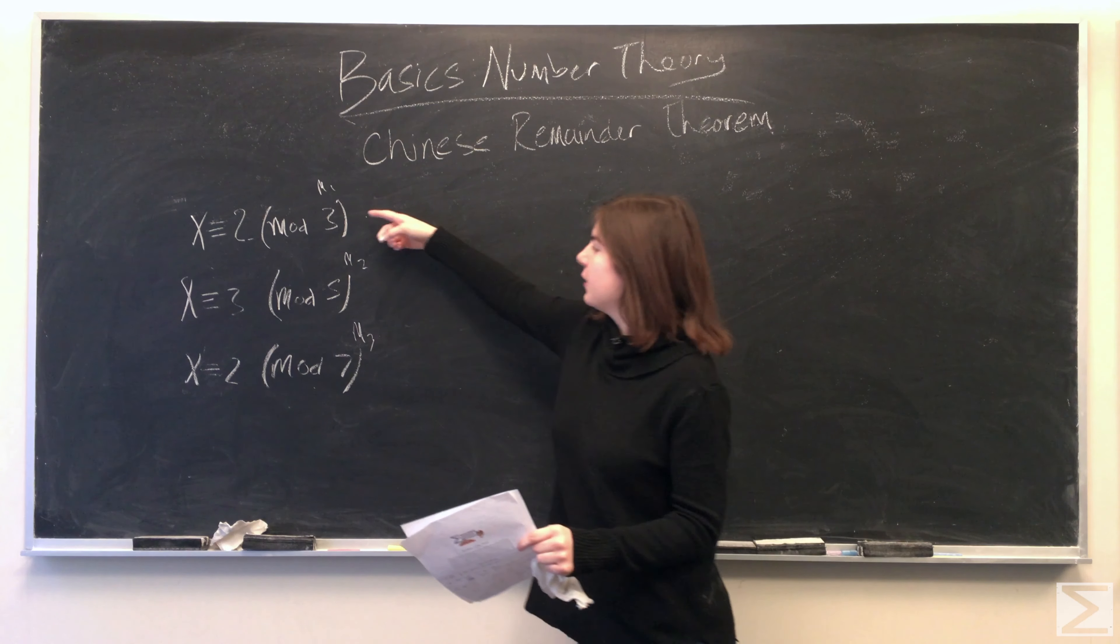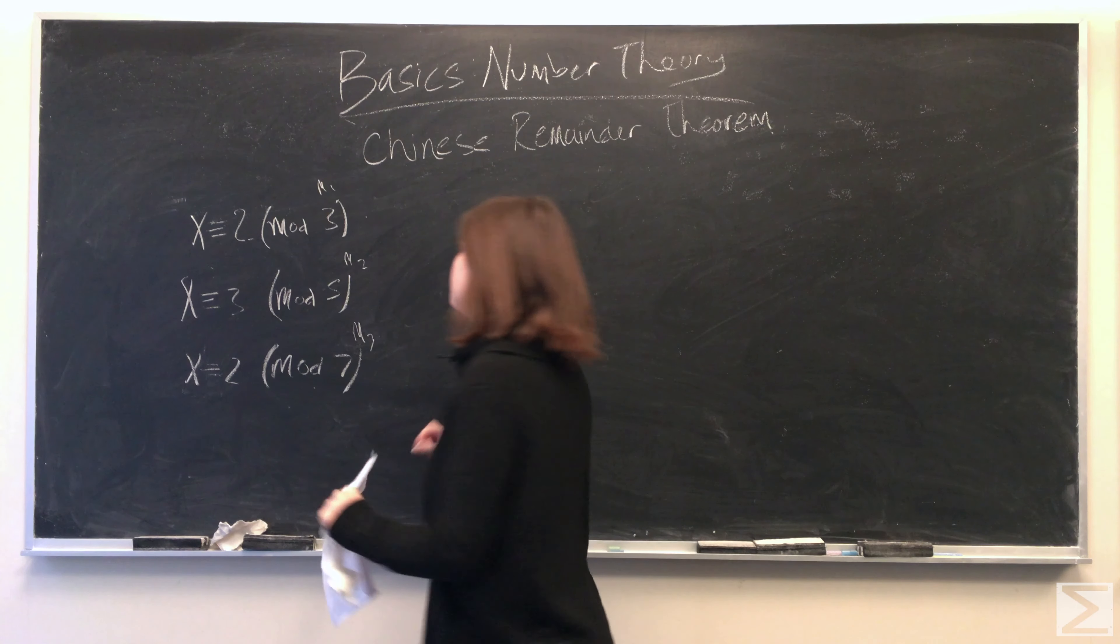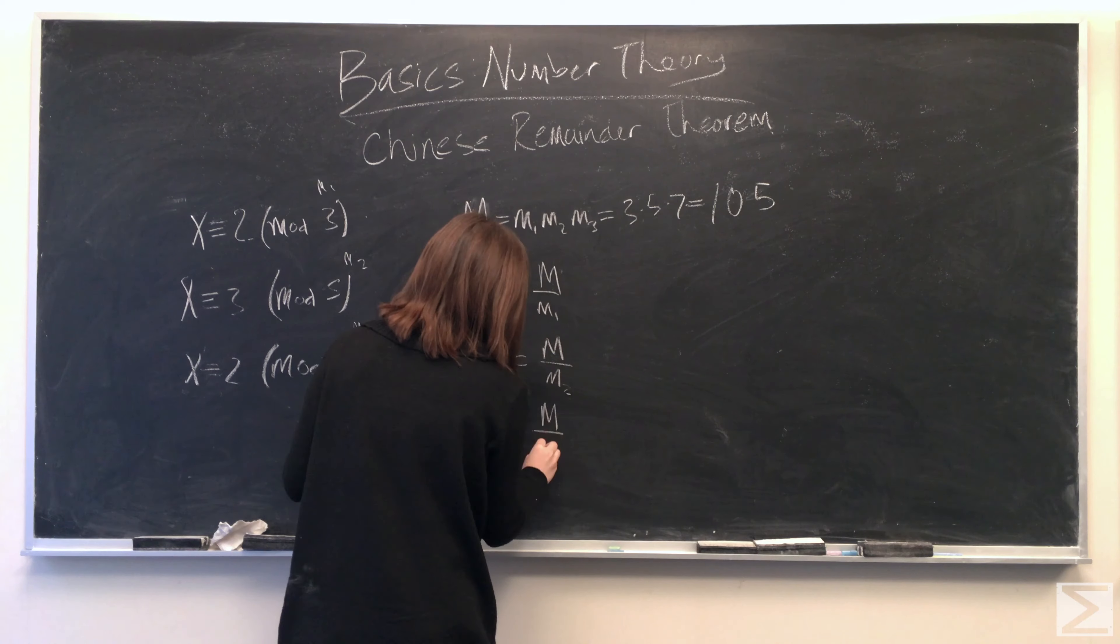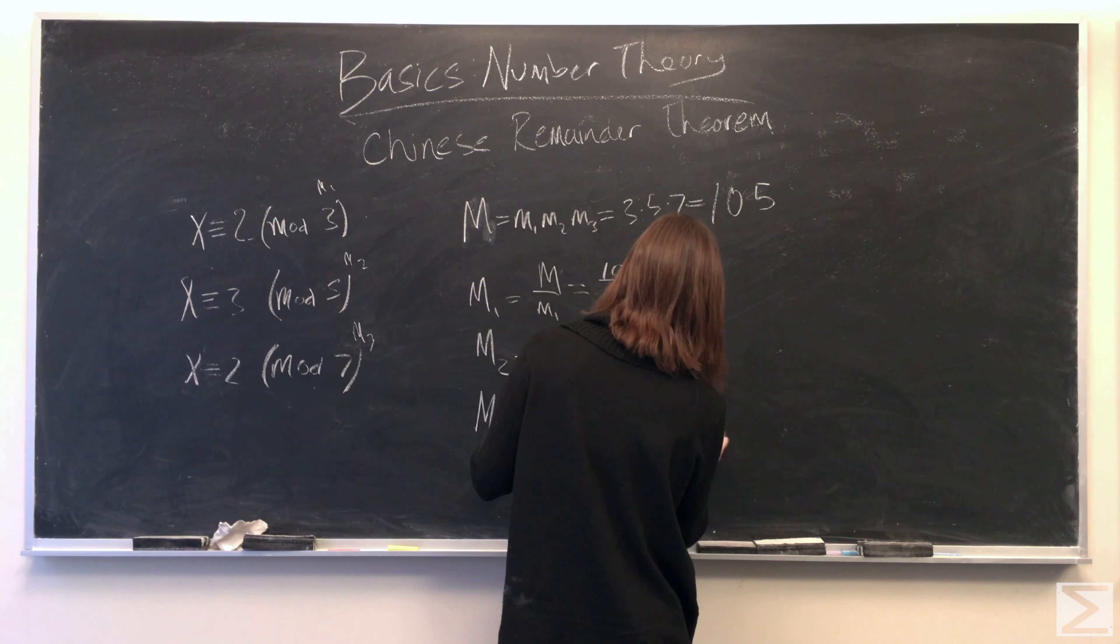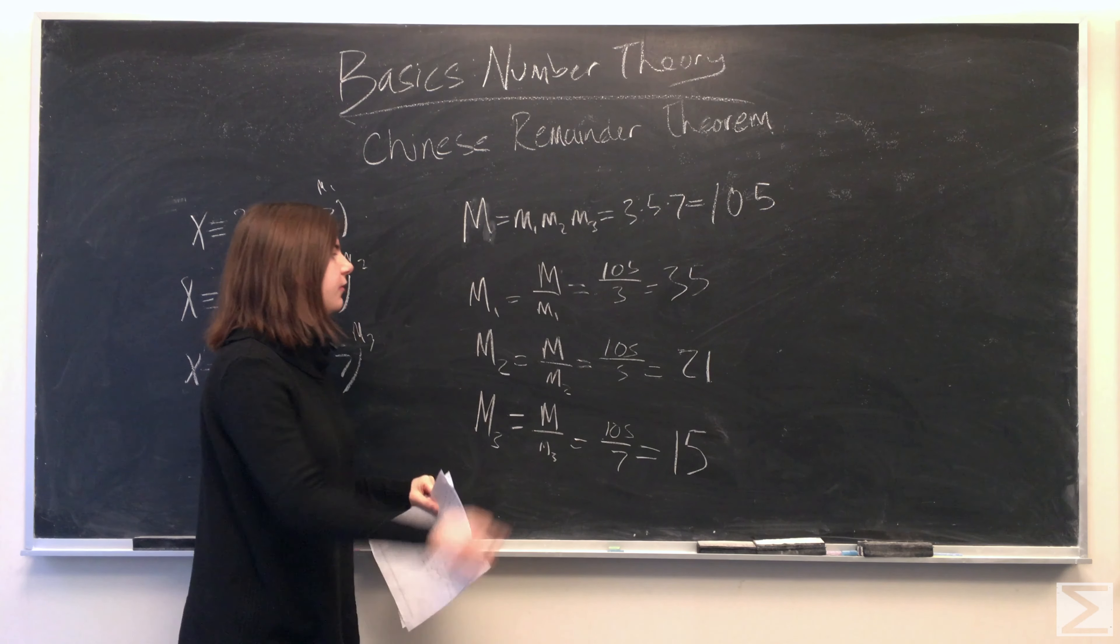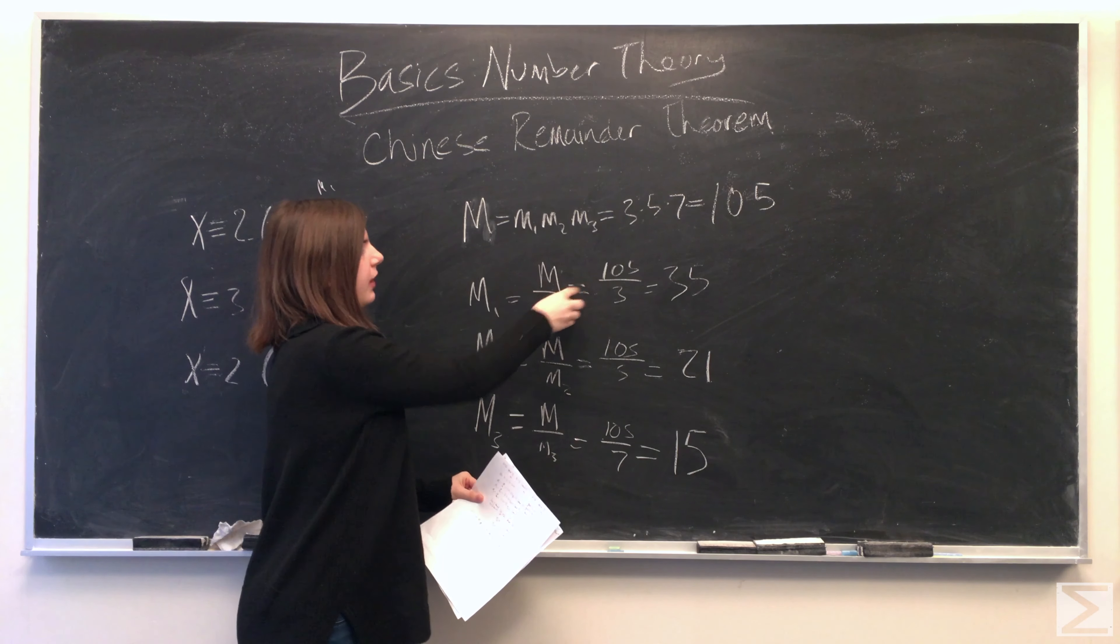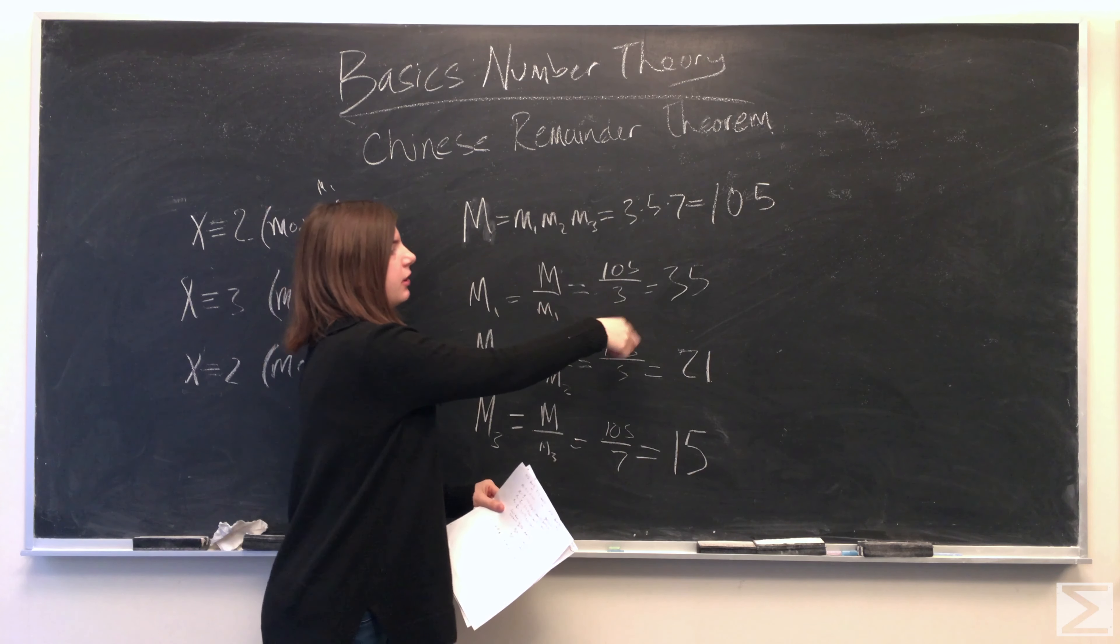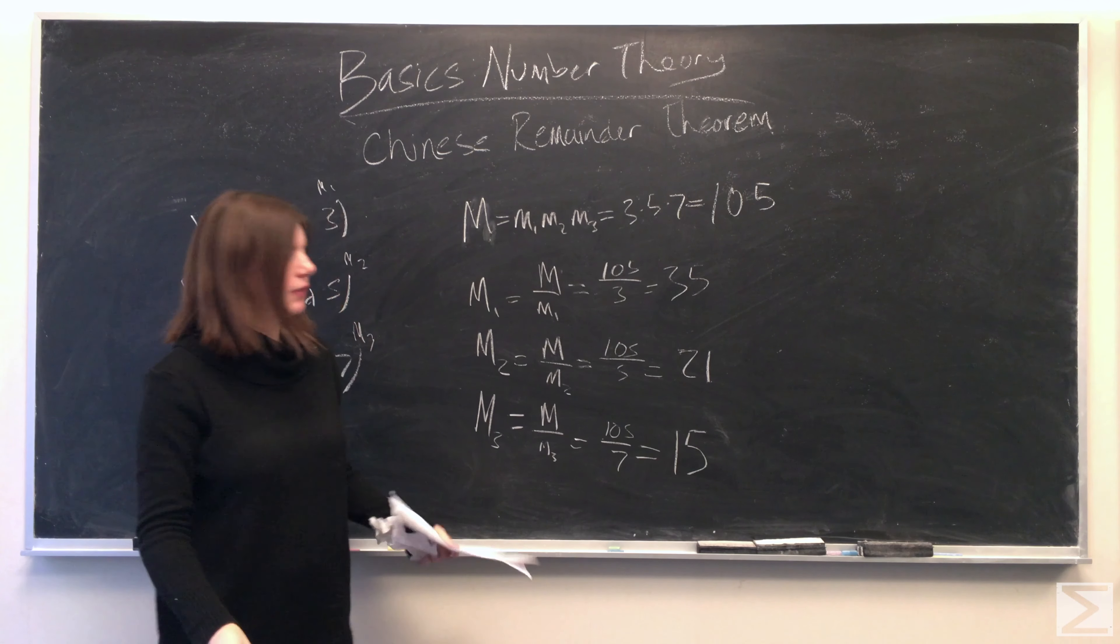First thing we're going to do is multiply 3 times 5 times 7, and that's equal to our big M. So our large M is 105. And then to find big M1, big M2, and big M3, we take M, 105, and divide it by the small m's. So we have 105 divided by 3 is 35, M2 is 21, and M3 is 15.